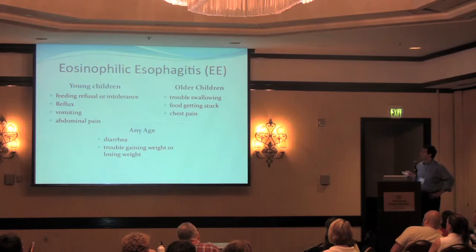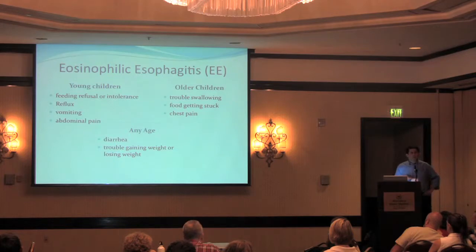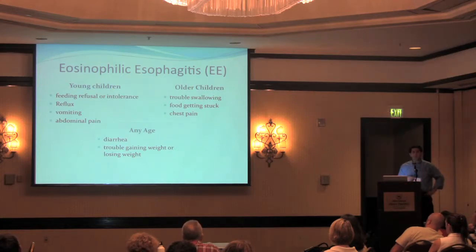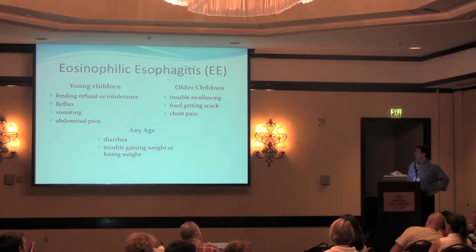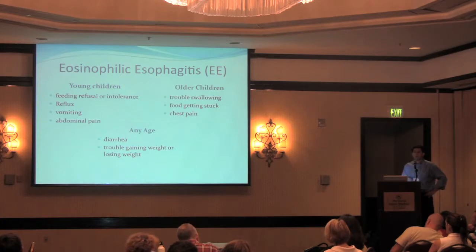What are the symptoms of eosinophilic esophagitis — we'll abbreviate that EE? In very young children, it's basically a child who has very bad spitting up, not normal baby spit-up, much worse than usual — significant reflux and vomiting, or they seem to have belly pain all of the time. Older children will complain of trouble swallowing or food getting stuck, and also chest pain. At any age, diarrhea is a symptom — even though it affects the esophagus — along with trouble gaining weight or actually losing weight.